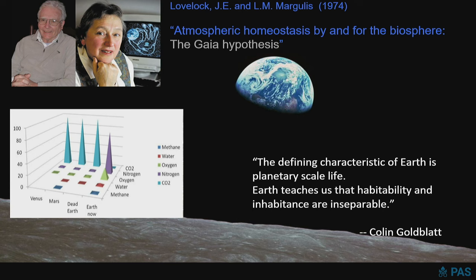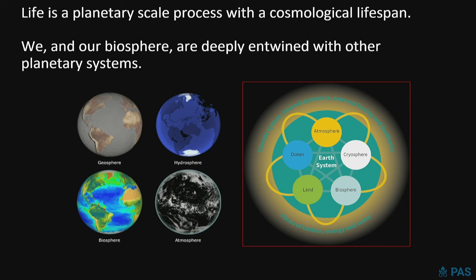Gaia, as controversial as it's been, has also been very influential and profound and led to a lot of what is today considered Earth system science, where we realize we cannot separate the biotic influences in the Earth system from the other Earth systems. We know now, partly due to insights from comparative planetology and astrobiological inquiry, that life is very much a planetary-scale process with a cosmological lifespan, and that we in our biosphere are deeply entwined with other planetary systems.